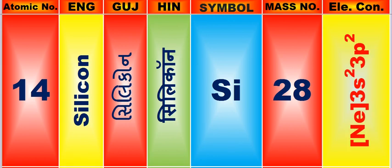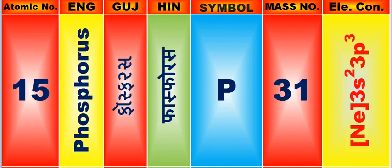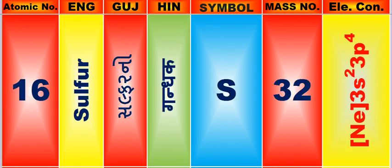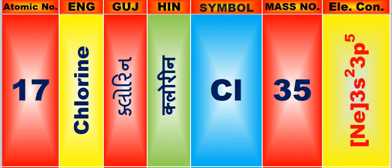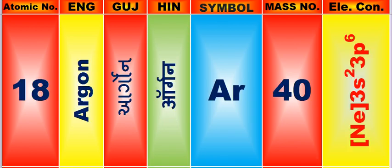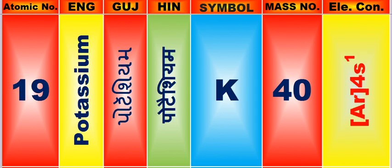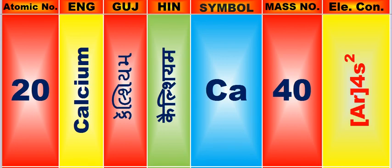Atomic number is 14, name of atom is Silicon. Atomic number is 15, name of atom is Phosphorus. Atomic number is 16, name of atom is Sulfur. Atomic number is 17, name of atom is Chlorine. Atomic number is 18, name of atom is Argon. Atomic number is 19, name of atom is Potassium. Atomic number is 20, name of atom is Calcium.